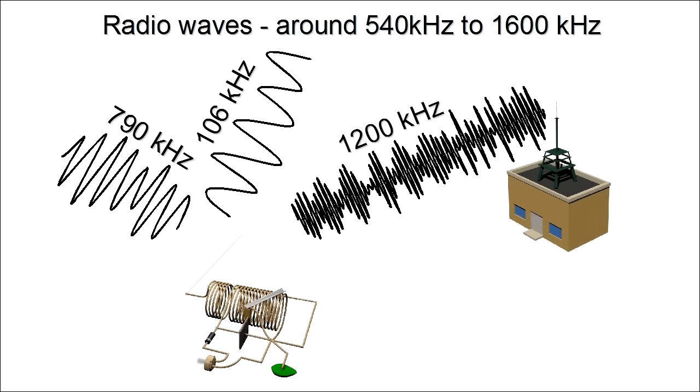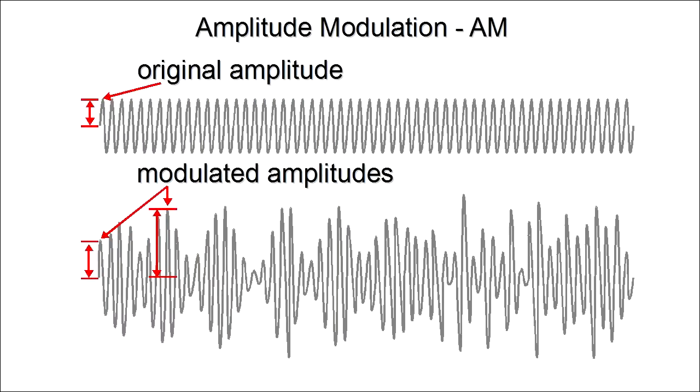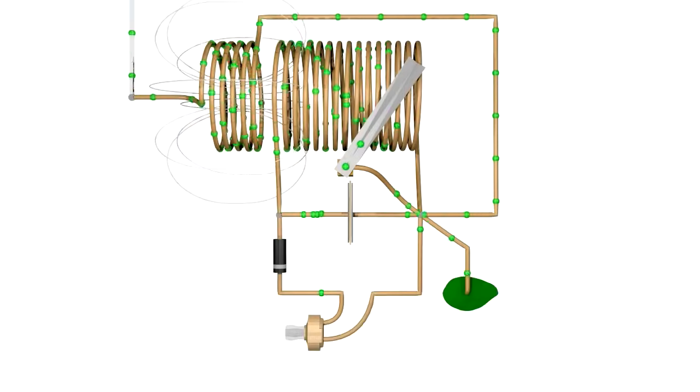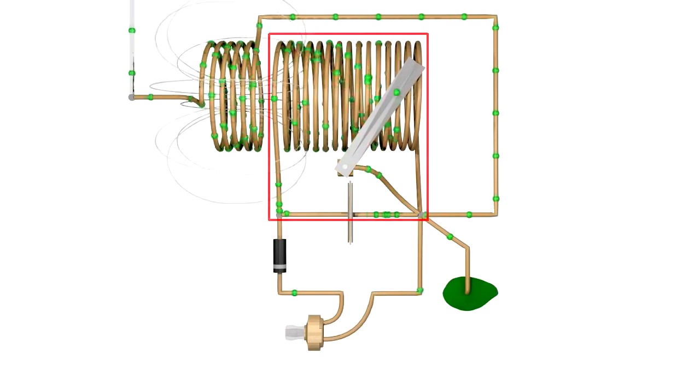We call the radio wave an amplitude modulated wave, or AM wave, because we created it by modulating, or adjusting, the height of the wave. The height of the wave is the amplitude. Back at our crystal radio, once we've tuned into that frequency, the electrons in this part of the circuit are moving back and forth at that frequency.